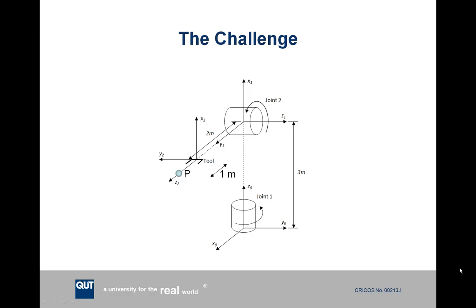The general challenge we'll be addressing today is shown in this schematic. If we have a point P which is expressed or known in one particular reference frame — in this case drawn right next to the tool point reference frame or reference frame 2 — we might know that this is 1 meter along in the Z direction in reference frame 2. Often we need to find out where this point P is in terms of a different reference frame, such as reference frame 0, which is the base of the robot, or joint 1.